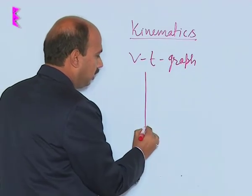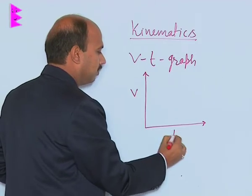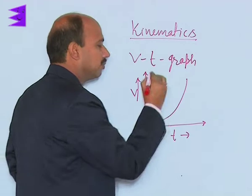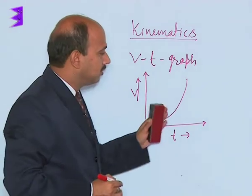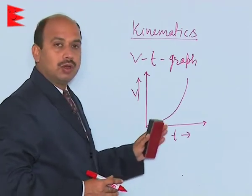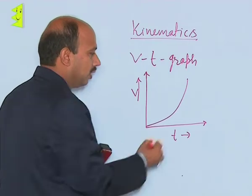Here this is V and this is t. The graph you are getting, what type of velocity is changing here? It is not changing equally. So there is simply non-uniform acceleration; we can say that is variable acceleration.